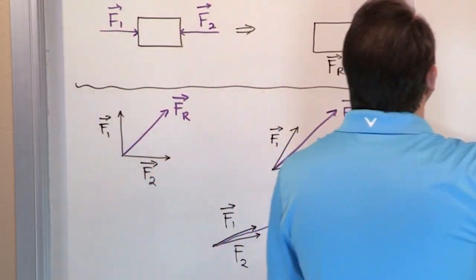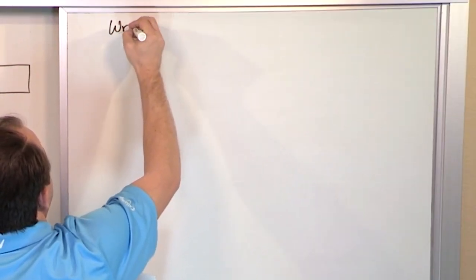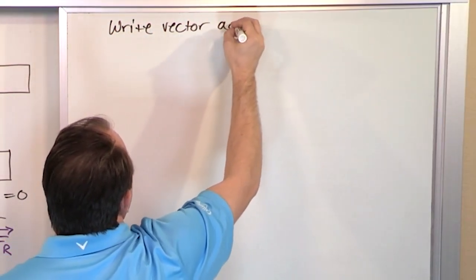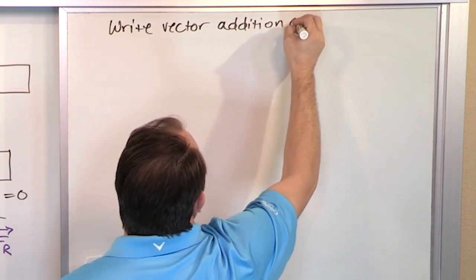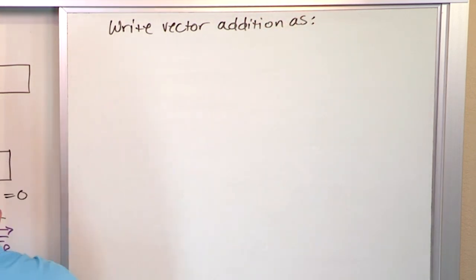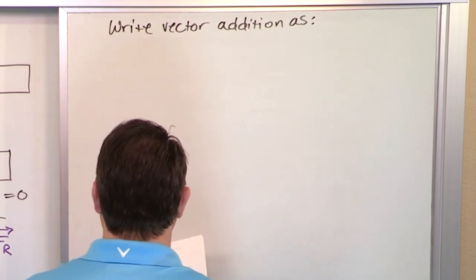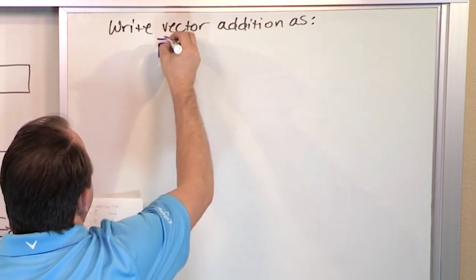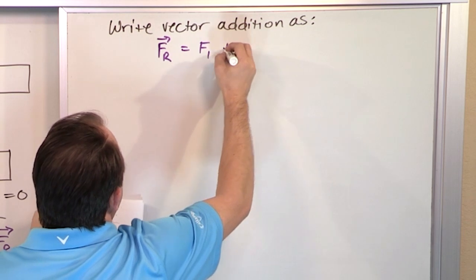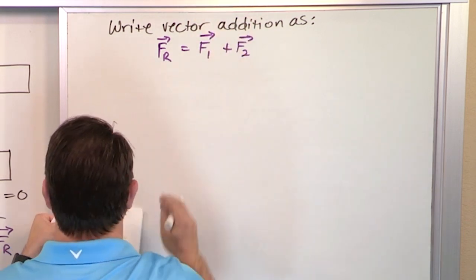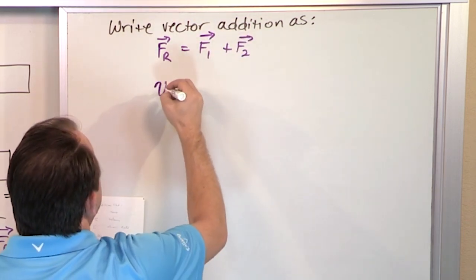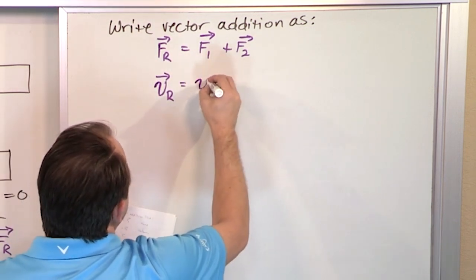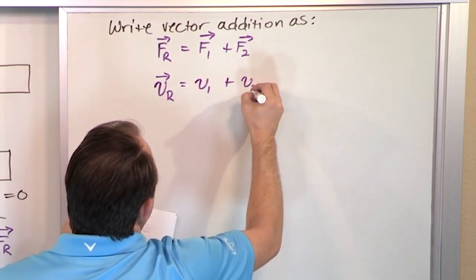The first thing I want to say is we write vector addition as the following. Just a couple of quick examples. If I'm dealing with forces, we say the resultant force is equal to F1 plus F2. If we're dealing with velocities, we might say that the resultant velocity, because velocities are vectors also, is V1 plus V2. Got to keep our bars. I'm going to forget at some point to do that.